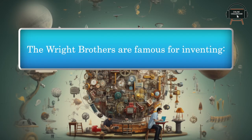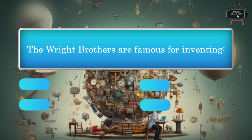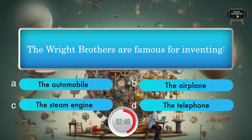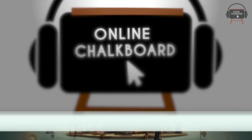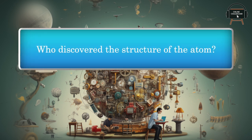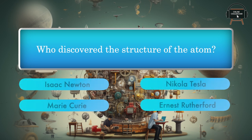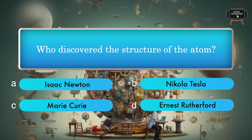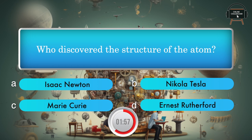The Wright Brothers are famous for inventing: the automobile, the airplane, the steam engine, the telephone. Answer: The airplane. Who discovered the structure of the atom? Isaac Newton, Nikola Tesla, Marie Curie, Ernest Rutherford. Answer: Ernest Rutherford.